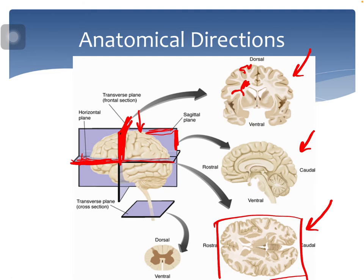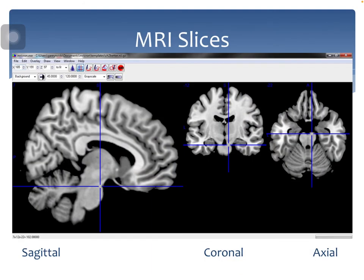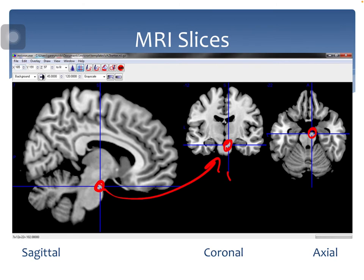MRI is a 3D image of the brain collected using a very strong magnet to align atoms, then taking a picture as the atoms return to their resting phase. It captures hundreds — even thousands — of slices depending on the scan type. You'll have a sagittal slice, a coronal slice, and an axial slice. You can pick one location of the brain and see what it looks like on all three planes, giving a comprehensive picture of that structure.